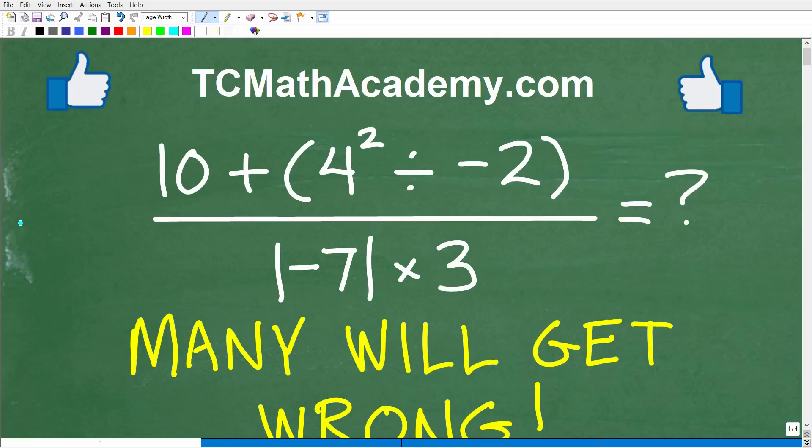Okay, let's go ahead and figure out this math problem without the aid of a calculator. So we have all these numbers and all these various operations. Matter of fact, let me go ahead and read the problem. It is 10 plus parentheses 4 squared divided by negative 2 and parentheses all over the absolute value of negative 7 times 3.